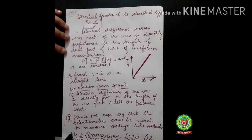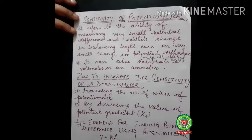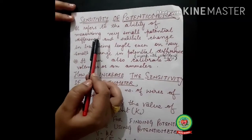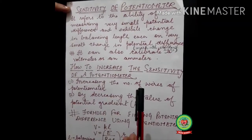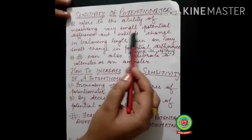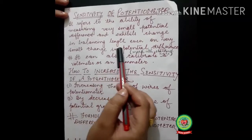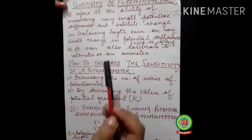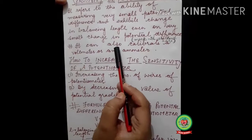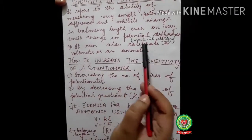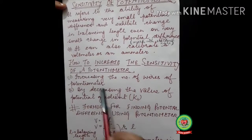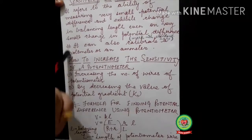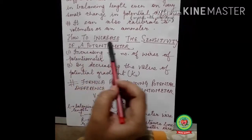Next is the sensitivity of the potentiometer. Sensitivity refers to the ability of measuring very small potential differences. A potentiometer can measure very small potential differences compared to a voltmeter, and it shows a change in balancing length even for a very small change in potential difference. It can also calibrate a voltmeter or ammeter — meaning mark it with a standard scale to indicate values of 1 volt, 2 volt, 3 volt, and so on.